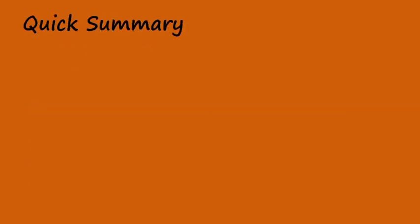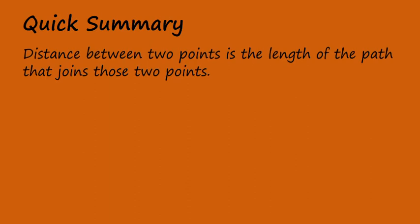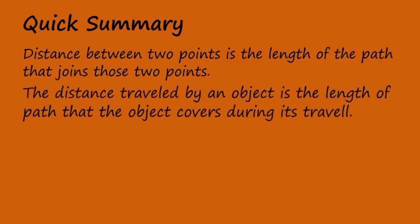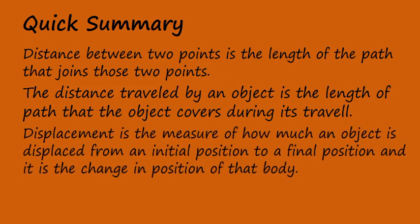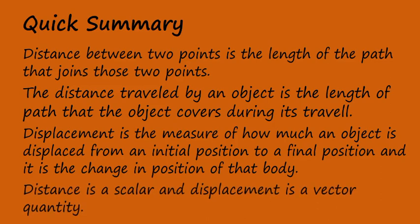Quick summary. Distance between two points is the length of the path that joins those two points. The distance travelled by an object is the length of path that the object covers during its travel. Displacement is the measure of how much an object is displaced from an initial position to a final position — it is the change in position of that body. Distance is a scalar and displacement is a vector quantity.